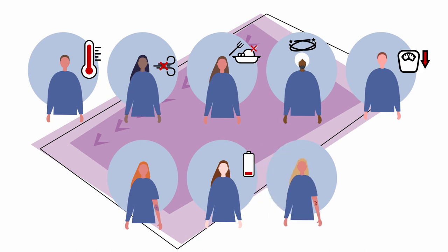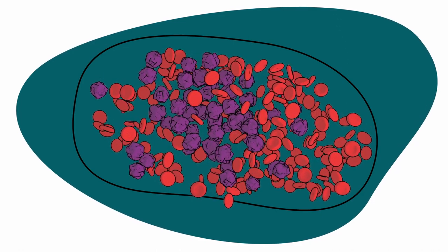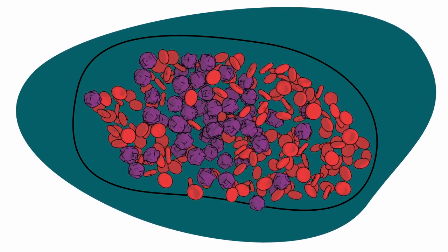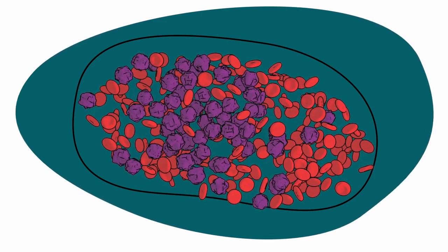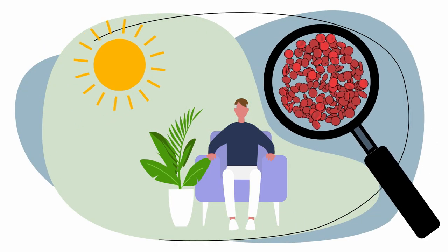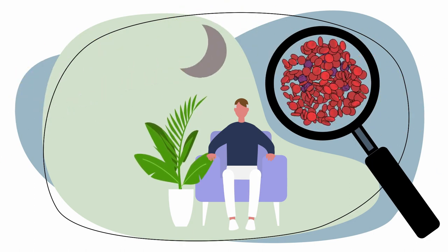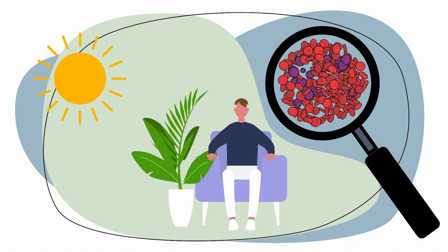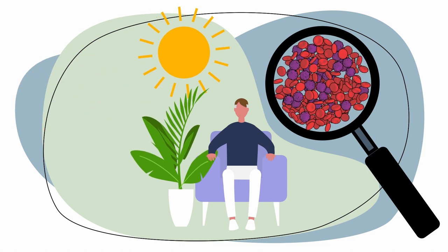Many signs and symptoms of AML occur when there are not enough normal blood cells. This happens when the leukemia cells crowd out the normal blood making cells in the bone marrow. Because blood cells grow very quickly, it's possible to have no symptoms and normal blood work even a few weeks or months before a diagnosis of AML.